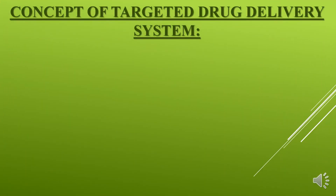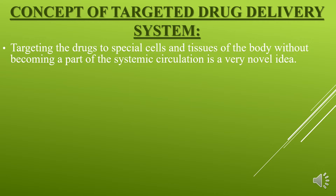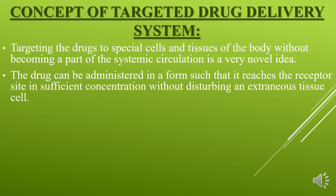Concept of Targeted Drug Delivery System. First: targeting drugs to special cells and tissues of the body without becoming part of the systemic circulation is a very novel idea. Second: the drug can be administered in a form such that it reaches the receptor site in sufficient concentration without disturbing any extraneous tissue cell — meaning the drug reaches the receptor site without disturbing healthy tissue cells.